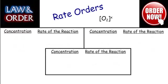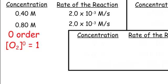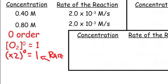Let's talk about rate orders. The order of a reaction for a substance is the exponent — this X value is what we're trying to find. For example, if the concentration of oxygen gas doubles from 0.4 molar to 0.8 molar, and the rate of reaction stays the same at 2×10⁻³, then doubling the concentration did not change the rate. That's called a zero-order reaction — 2 to the zero power is always 1, so the rate stays the same.